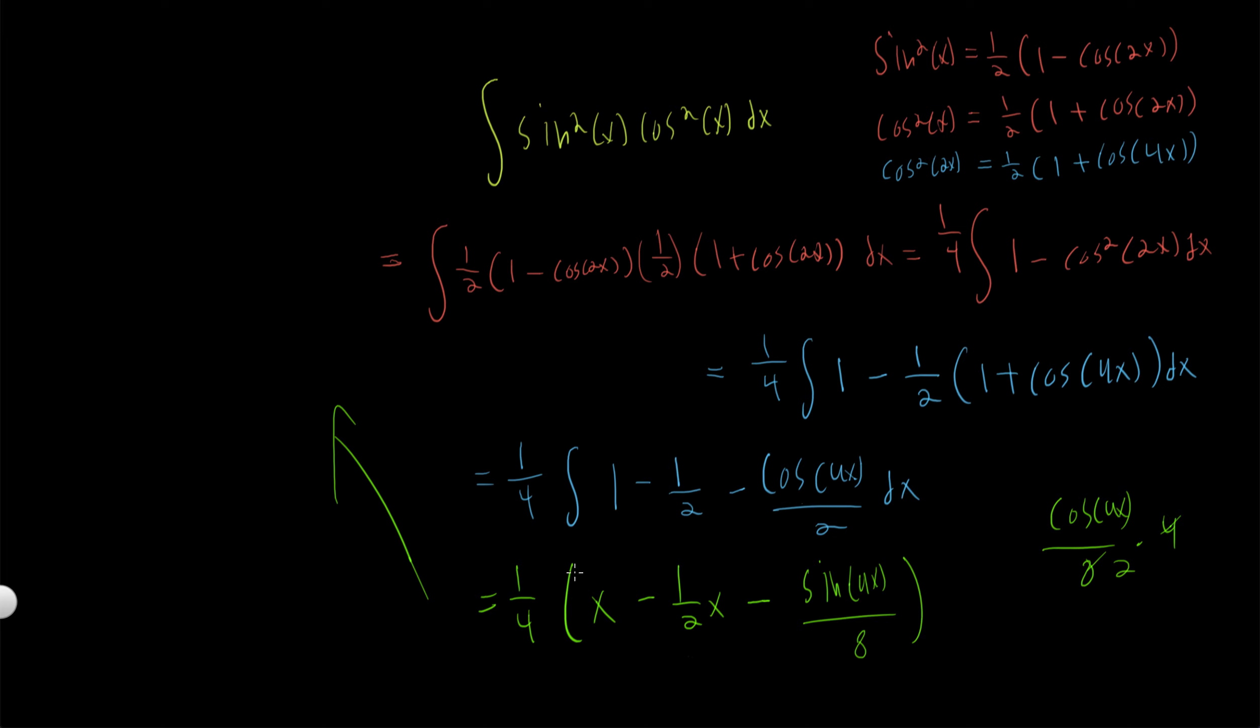Our official answer, we can simplify it a little bit. We get one-fourth of x minus one-eighth of x, one-eighth x minus sine of 4x over 32. Maybe we can combine these two.